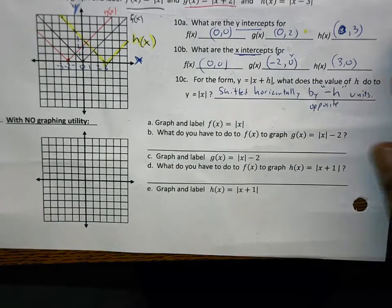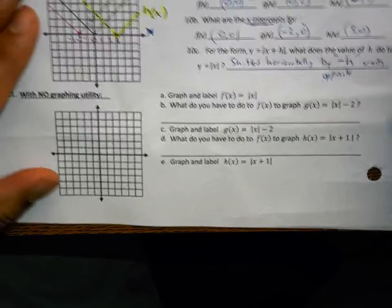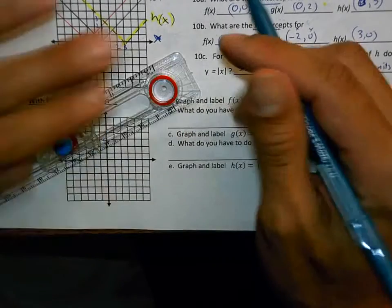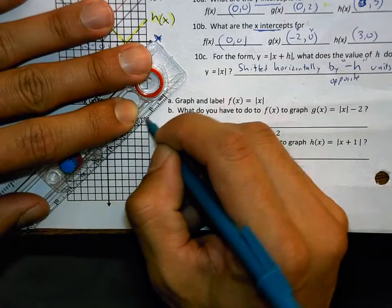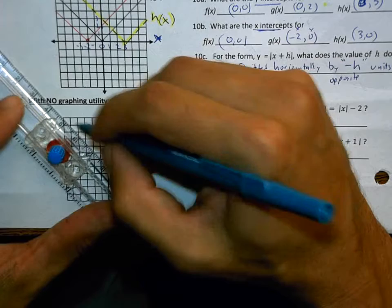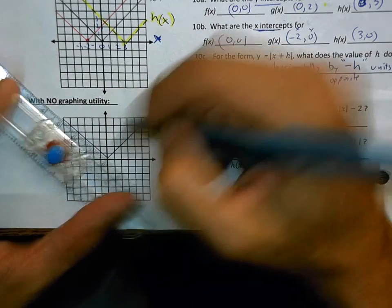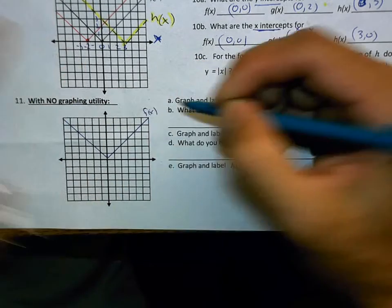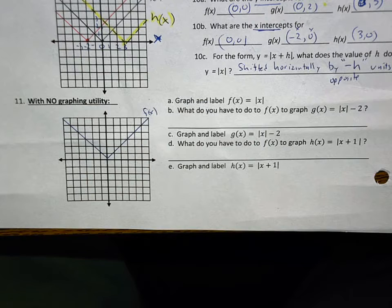So this is what it's asking you to do. If you understand that, you should be able to do number 11. Number 11 says, graph and label f of x is equal to the absolute value of x. Another absolute value of x function. I have done part A.